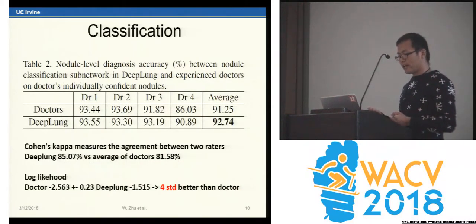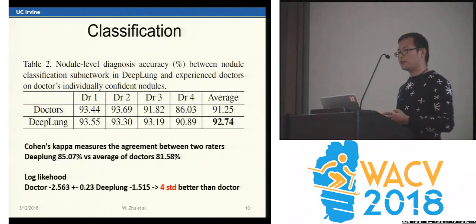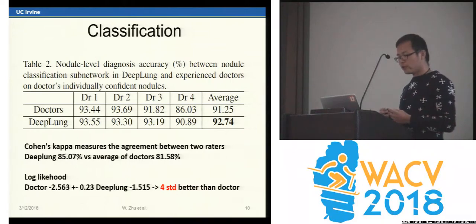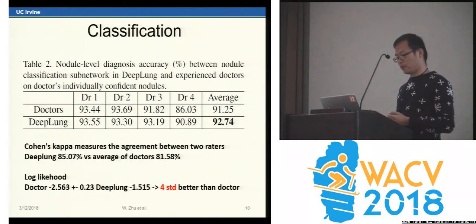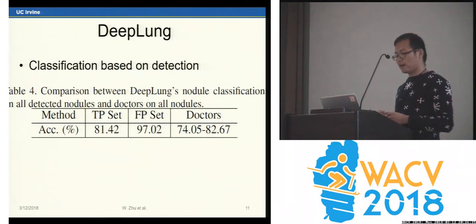The DPN achieves better performance than individual doctors based on their individually annotated nodules. For all nodules, DPN is 4 standard deviations better than the doctor. We calculate classification performance based on detected nodules.